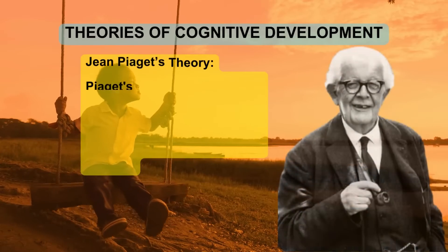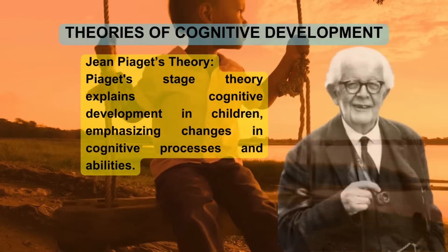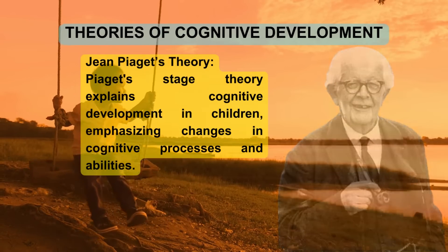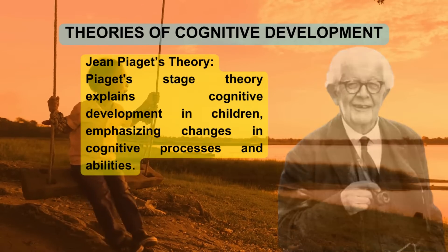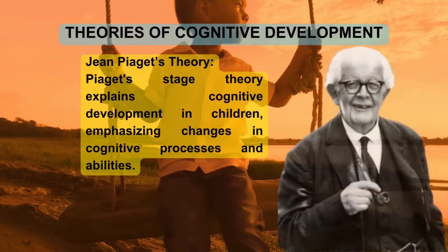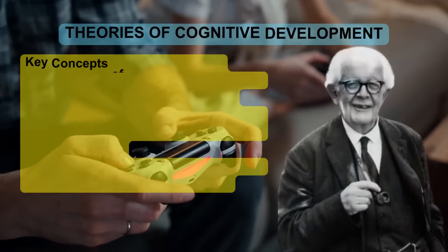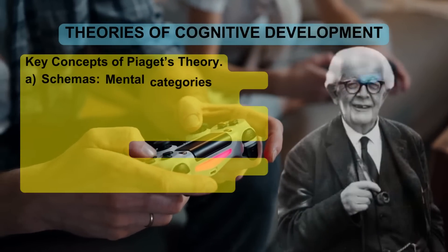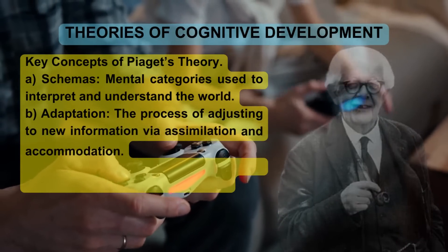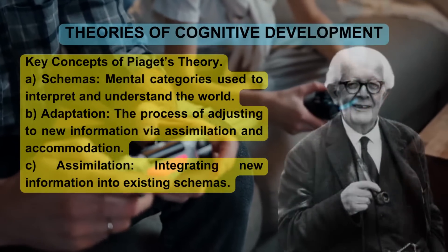Jean Piaget's theory is a stage theory that explains cognitive development in children, emphasizing changes in cognitive processes and abilities. A key concept is schemas: mental categories used to interpret and understand the world.